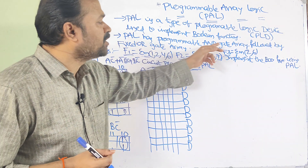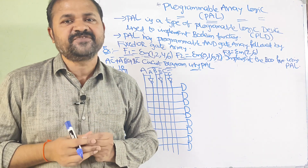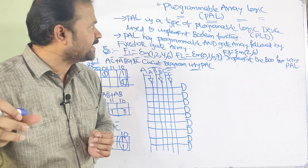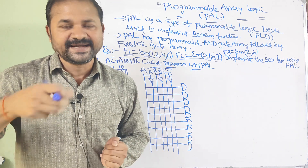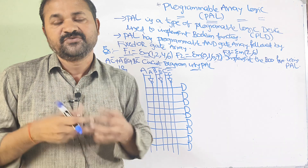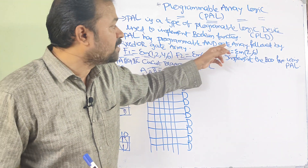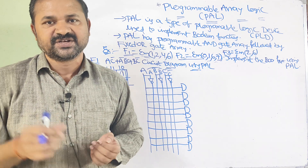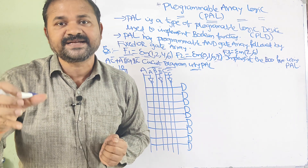PAL has a programmable AND gate array followed by a fixed OR gate array. This is the major difference between PAL and PLA. In PLA, we have a programmable AND gate array followed by a programmable OR gate array — we can perform operations on both the AND gates and OR gates. But in PAL, we can program the AND gate array, while the OR gates are fixed.